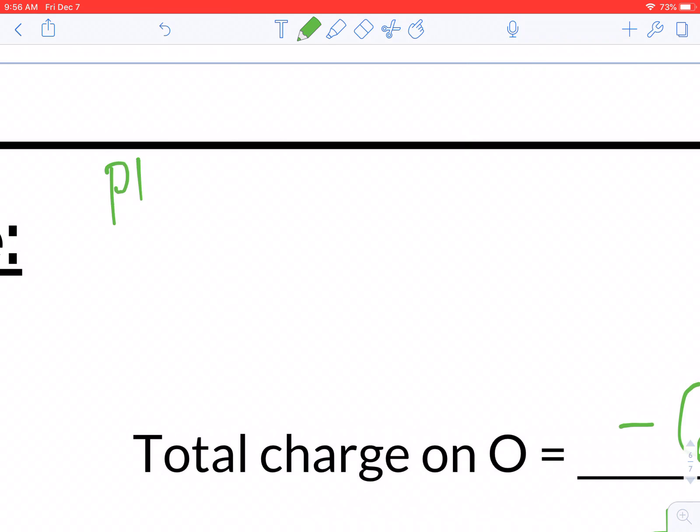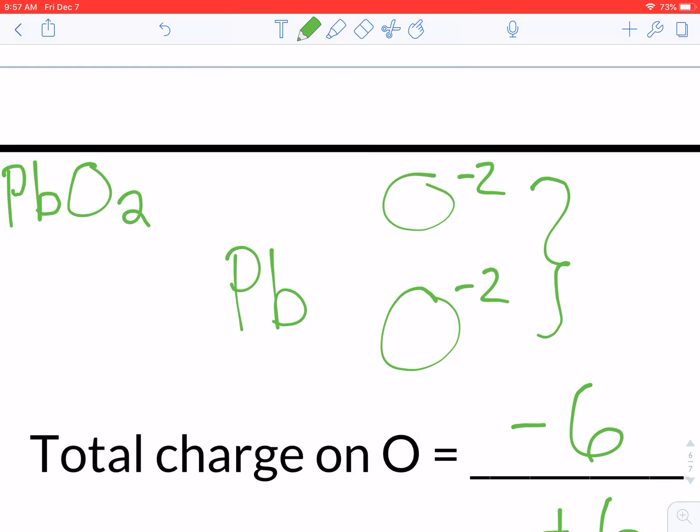So if you had lead bonded to 2 oxygens, if we draw this out, you can think, okay, there's 1 lead, there's 2 oxygens, we know our oxygens are negative 2, so that means that they add up to negative 4. And so that would mean that this single lead atom has to take all the positive charge, so it would be lead positive 4.